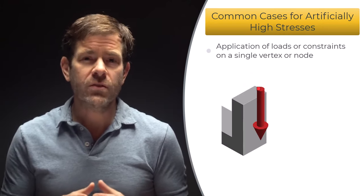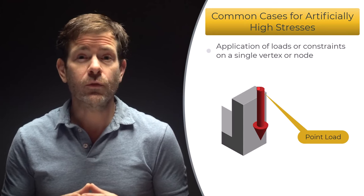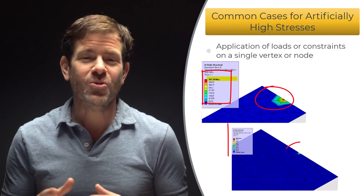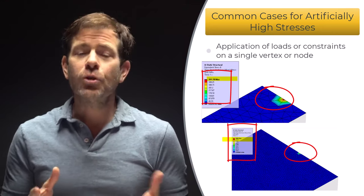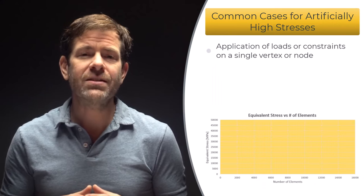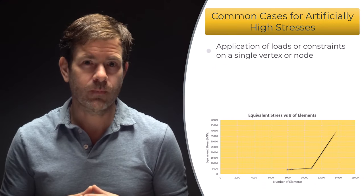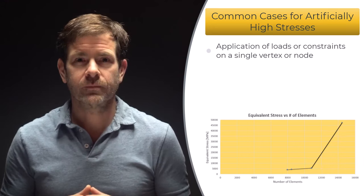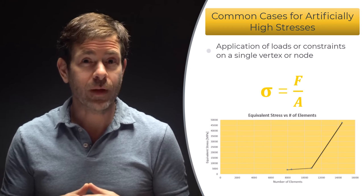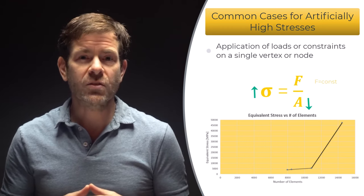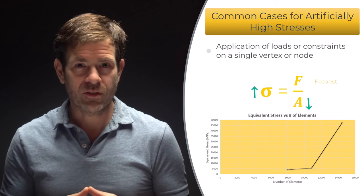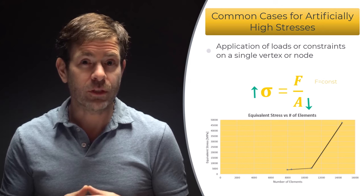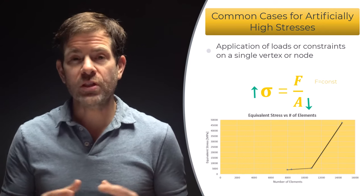For point loads and constraints, applying a force or constraint to a single vertex or node will create the situation where, as the mesh gets finer, the stress will increase. Notice how we have artificially high stress that grows as the mesh density increases. This arises because every node has an associated area of the mesh. In the simple equation of stress equals force over area, as the area gets smaller with mesh refinement, the stress increases. Similarly, if we constrain a vertex or single node, the reaction force at the constraint will also show similar behavior.